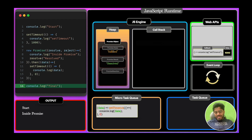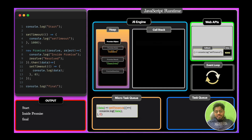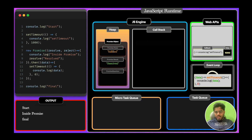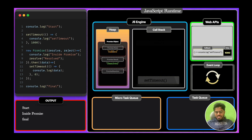It goes to the next line and this console executes to give an output of 'final'. Our event loop then checks both call stack and microtask queue. As the call stack is empty, the callback function from the microtask queue is pushed into the call stack and begins executing.